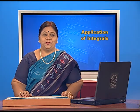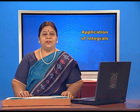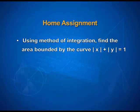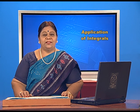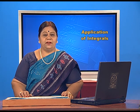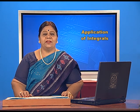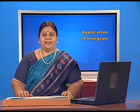Is it not an interesting problem? Students, note down the home assignment questions. Question 1: using the method of integration, find the area bounded by the curve |x| + |y| = 1. Question 2: find the area enclosed between the parabolas y² = 4ax and x² = 4ay, where a > 0. In this chapter we learnt how to calculate the area below simple curves and the area between two given curves using integration. Thank you.